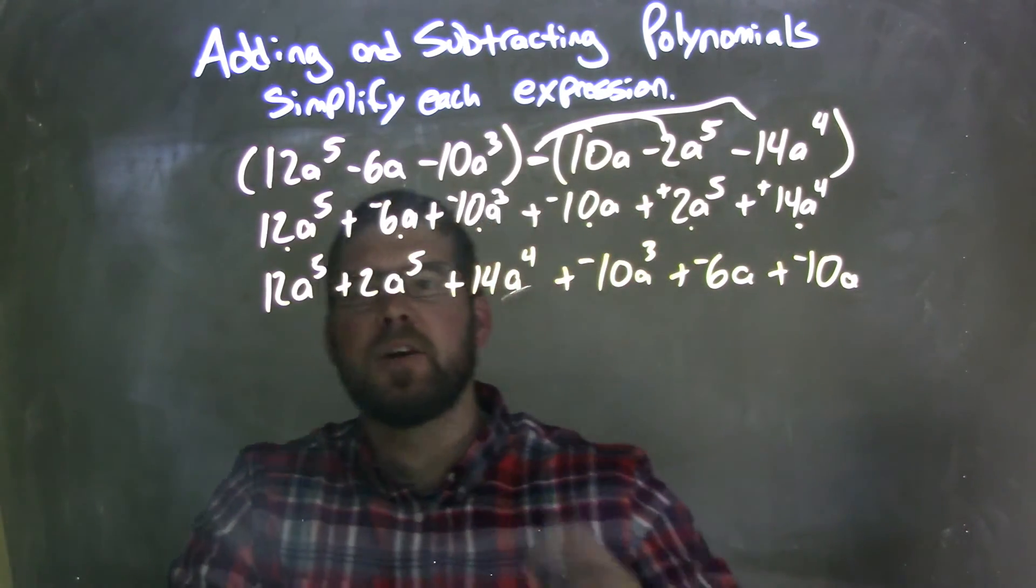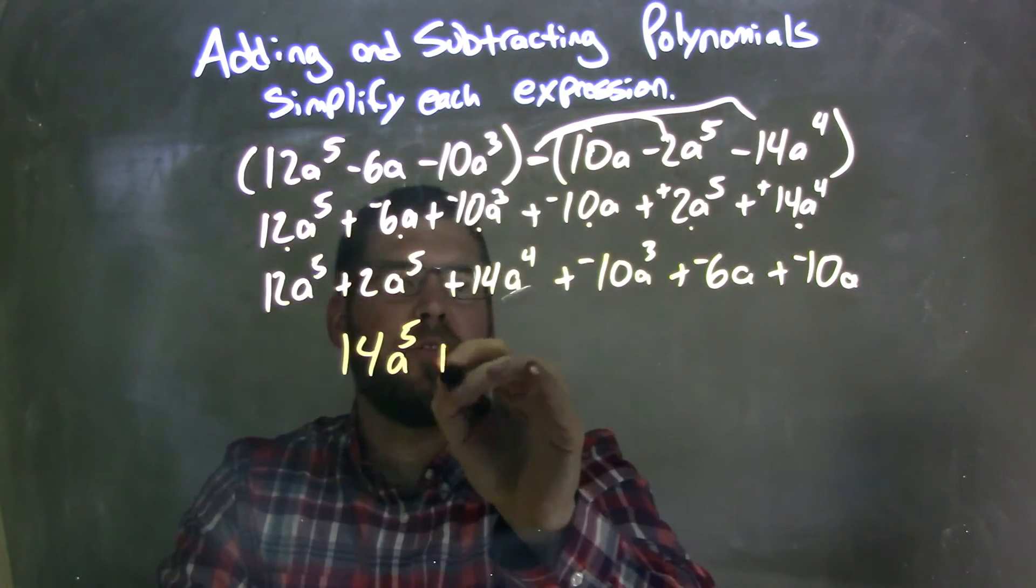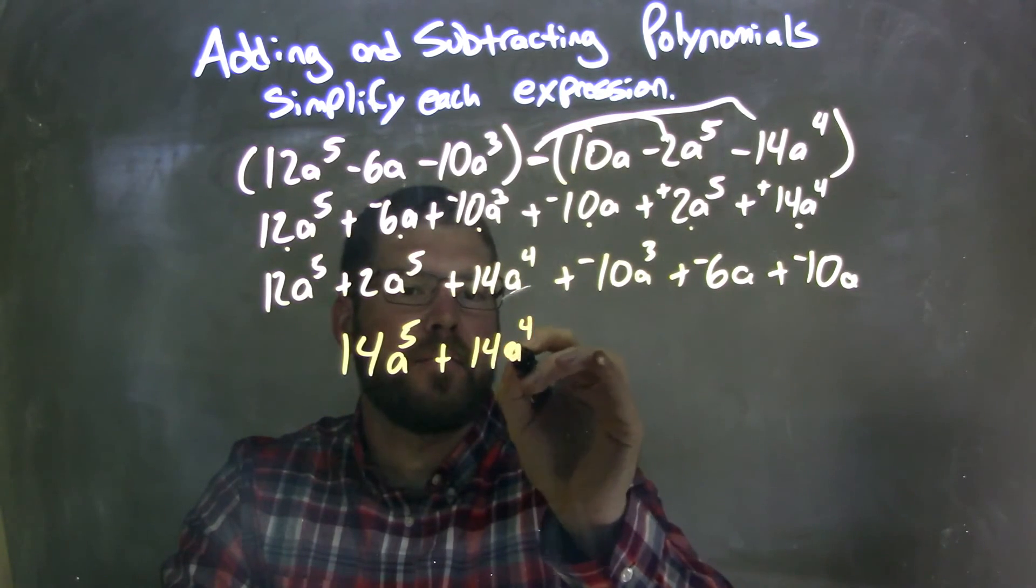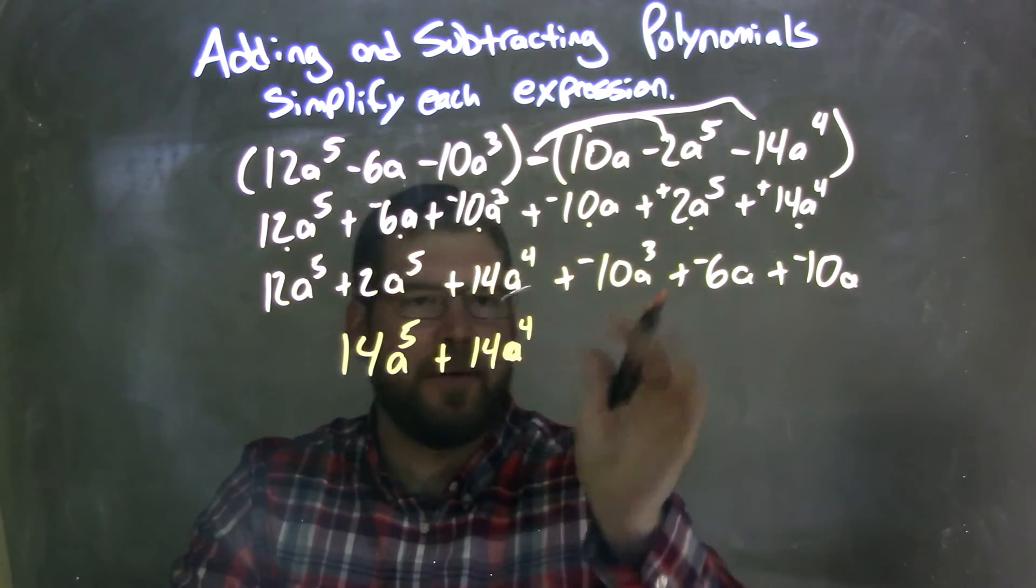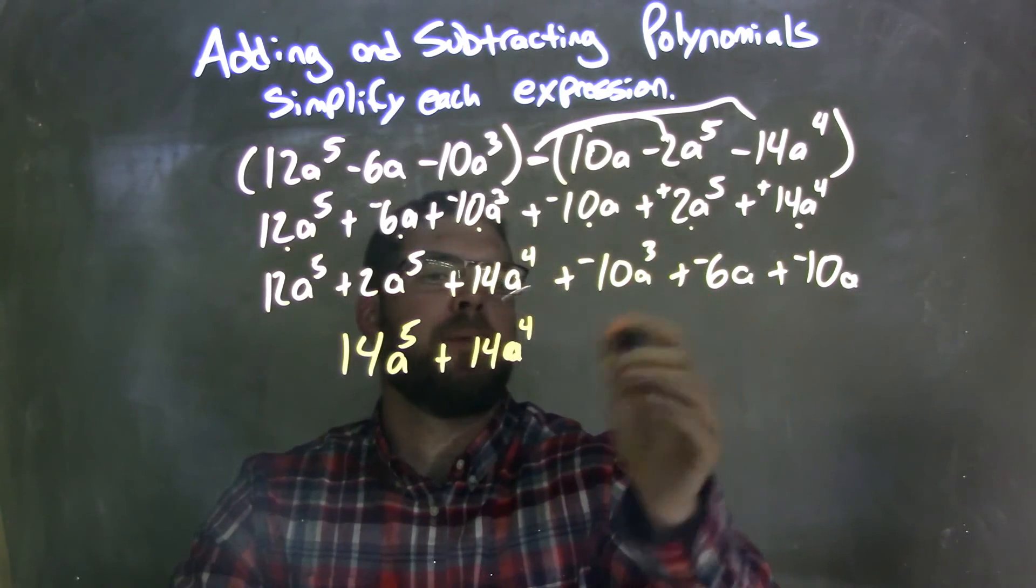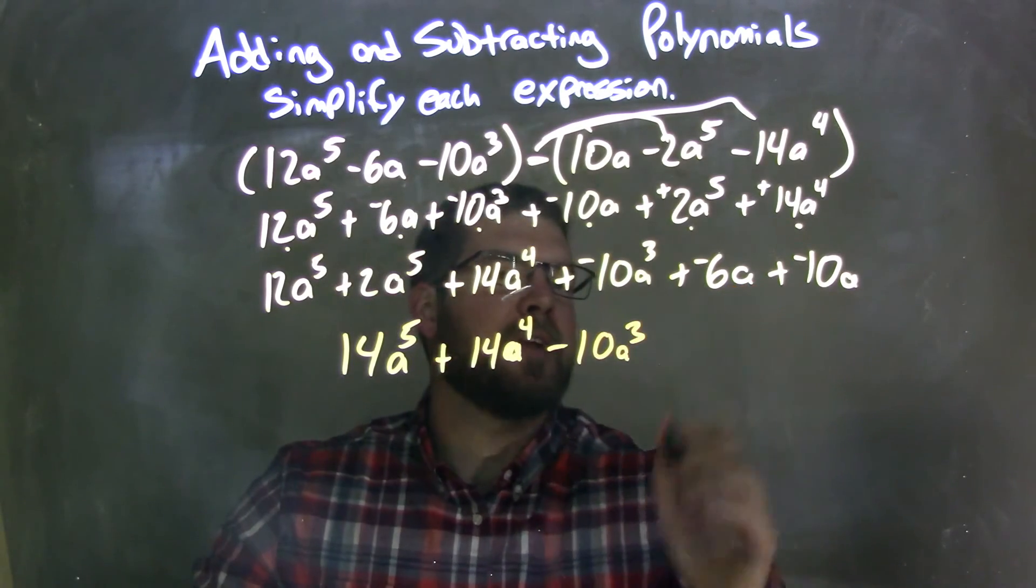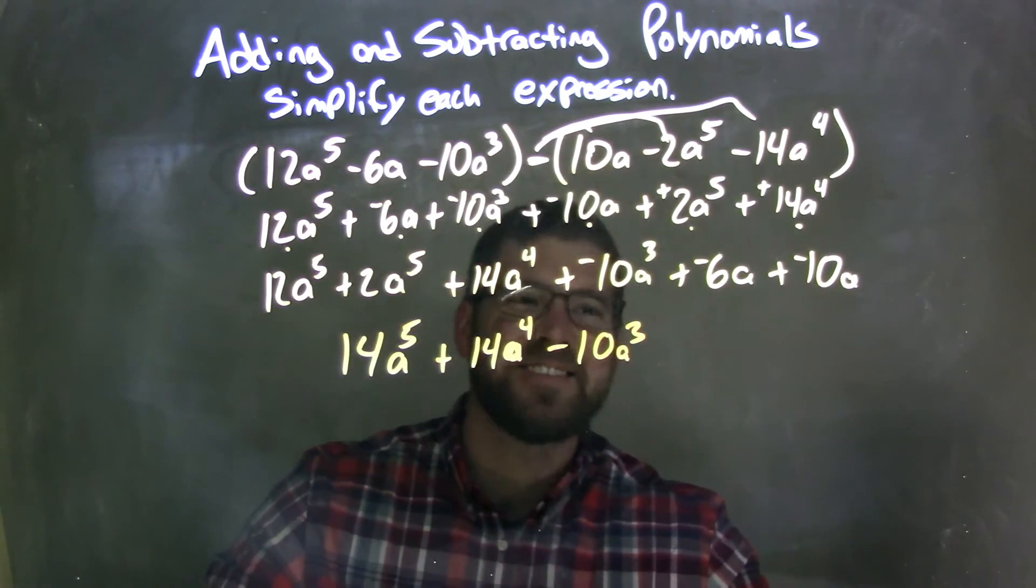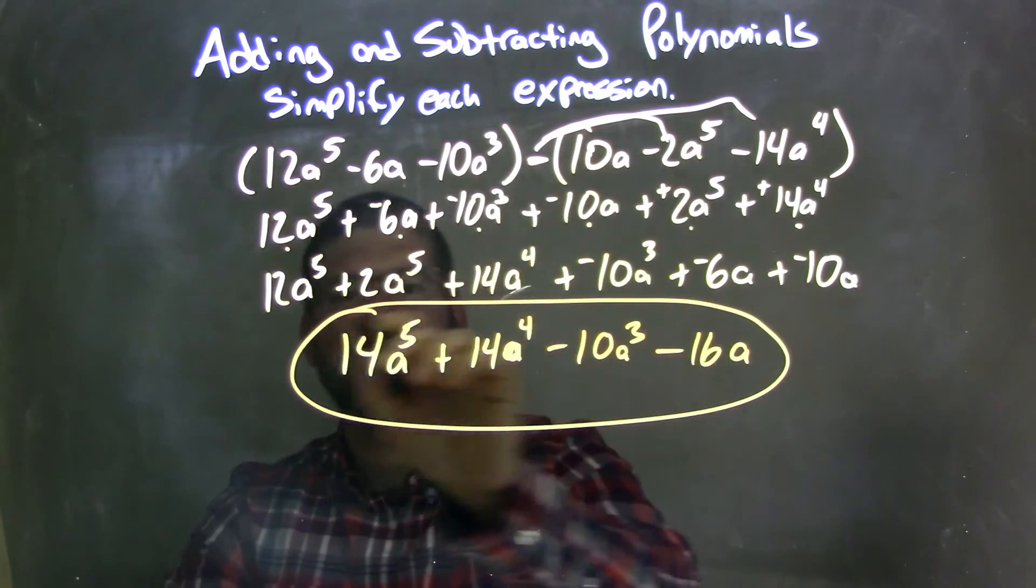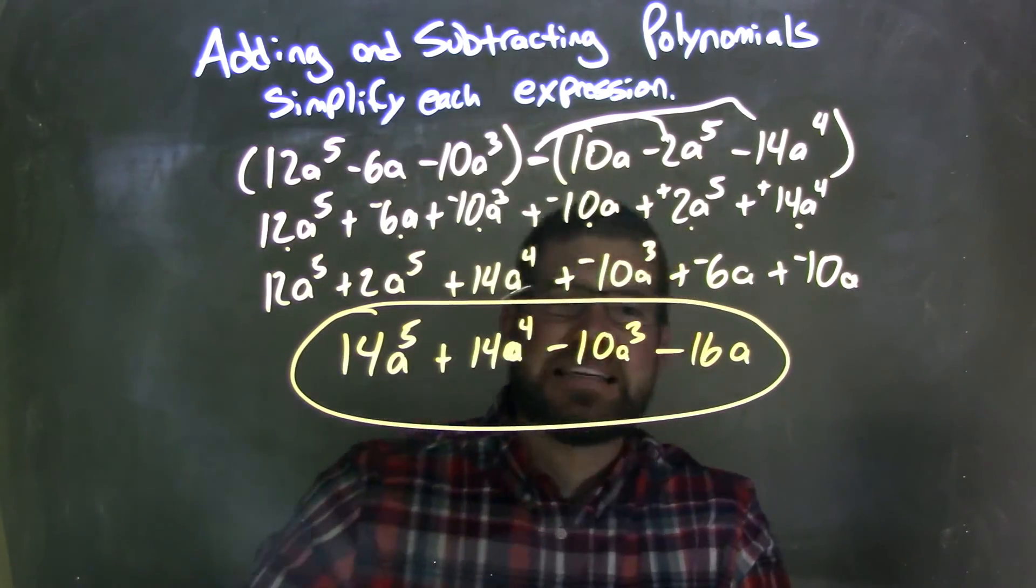Now let's combine our like terms. 12a to the 5th plus 2a to the 5th is 14a to the 5th, plus—there's no other a to the 4th power—so we have 14a to the 4th. Then plus negative 10a to the 3rd, nothing to combine it, so we can rewrite that to be minus 10a to the 3rd. And then negative 6a plus negative 10a is a negative 16a, so it's minus 16a. And so now we have our final answer here: 14a to the 5th plus 14a to the 4th minus 10a to the 3rd minus 16a.